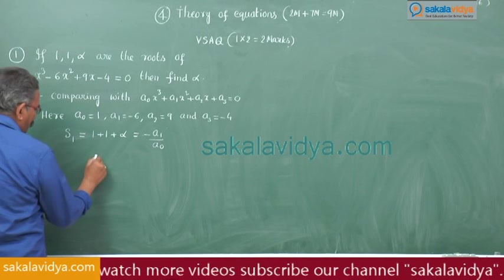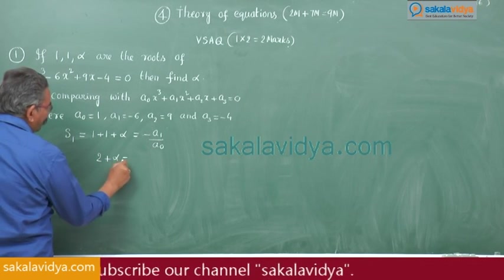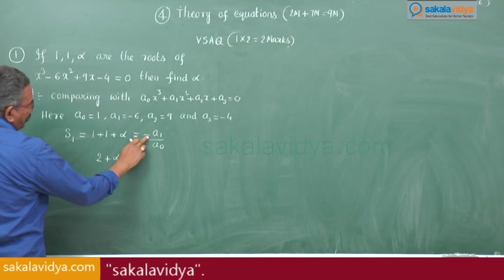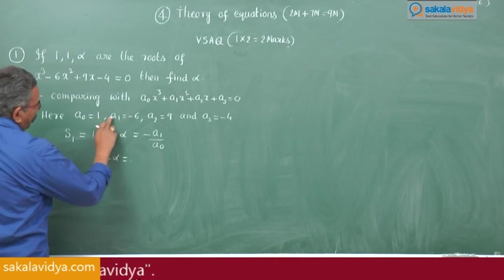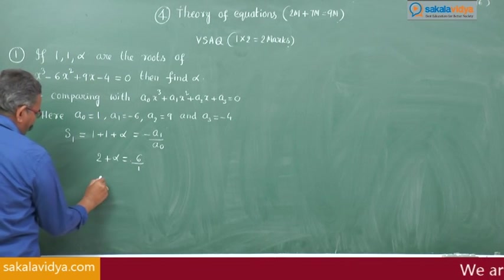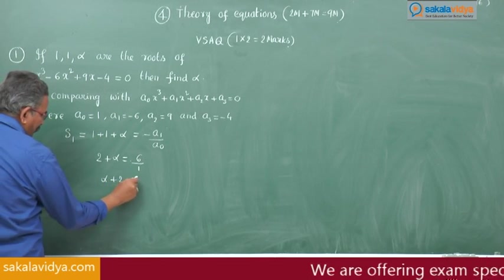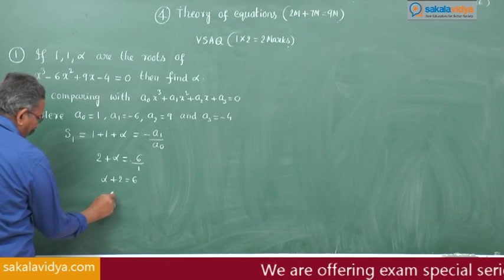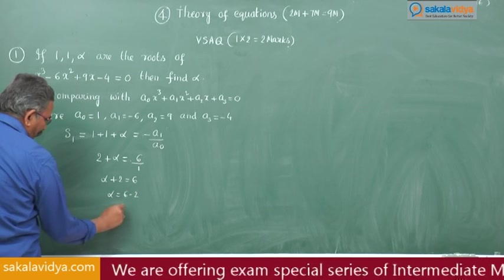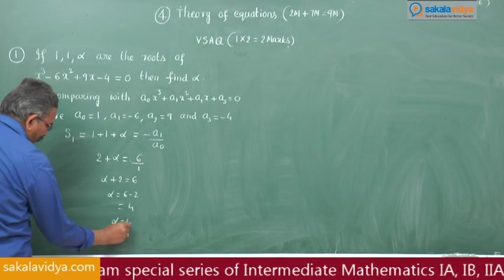1 plus 1 is 2, so 2 plus alpha equals minus A1, which is minus of minus 6, that is 6 by 1. So alpha plus 2 equals 6, therefore alpha equals 6 minus 2, that is 4. Hence alpha is equal to 4.